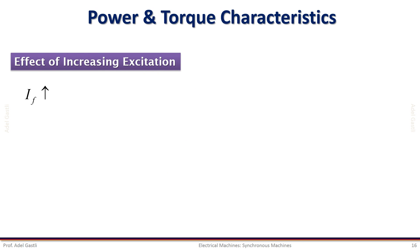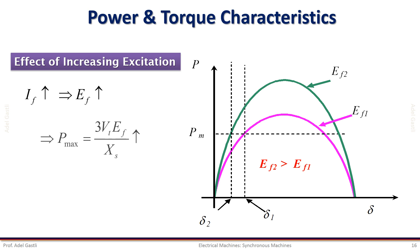By increasing the excitation current from IF1 to IF2, the excitation voltage increases from EF1 to EF2 as shown in this graph. So the maximum power that can be delivered by the machine increases, and the pull-out torque also increases. If the load real power is unchanged and equal to PM, the power angle decreases from delta1 to delta2, which means that for constant power delivery, if we increase the excitation the power angle will decrease to keep the same power.